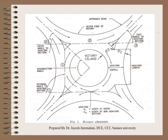This shows all the dimensions of a rotary intersection. E1 is the entry width, E2 is the exit width, and average E equals (E1 + E2) / 2. The weaving width is denoted by small w and the weaving length is denoted by small l — this is the area where merging and diverging takes place. This is also the intersection angle.